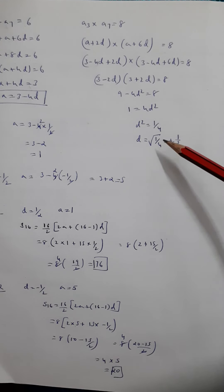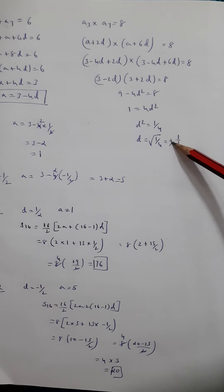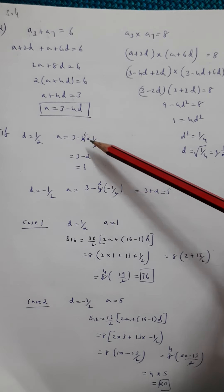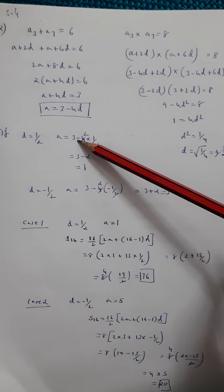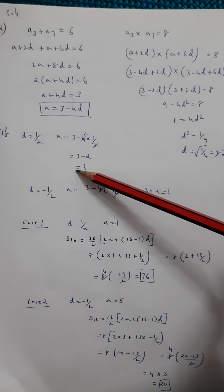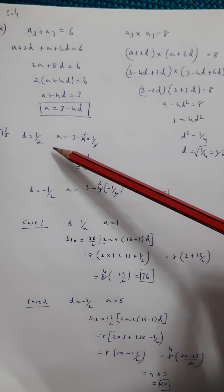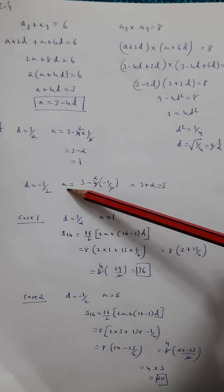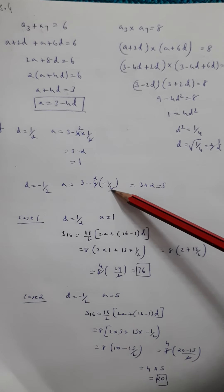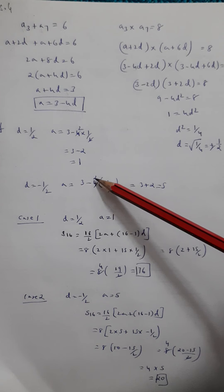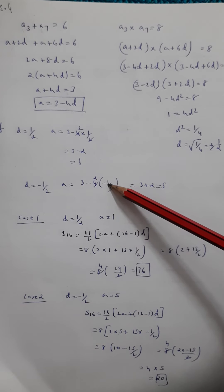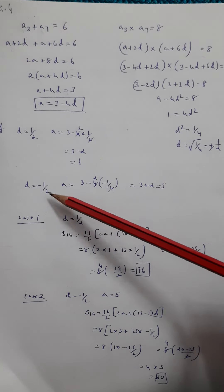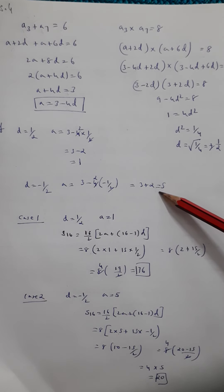Taking the positive case first: if d equals 1/2, then a equals 3 minus 4d equals 3 minus 4 times (1/2) equals 3 minus 2 equals 1. So when d is positive half, a is 1. For the negative case: if d equals negative 1/2, then a equals 3 minus 4 times (negative 1/2) equals 3 plus 2 equals 5. So when d is negative half, a is 5.